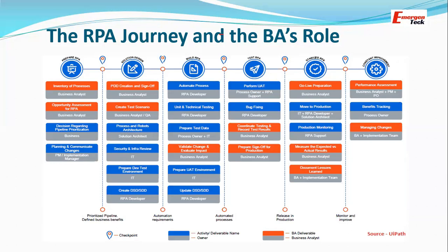Once development is done and the product is ready to move to production, the business analyst does testing from the business point of view — executing test cases, recording results, and preparing sign-off. Business users then go into UAT so the team gains more confidence about the production move. In the Stabilize RPA phase, the BA handles go-live preparation — managing credentials, handling the work environment, and ensuring everything is in order.